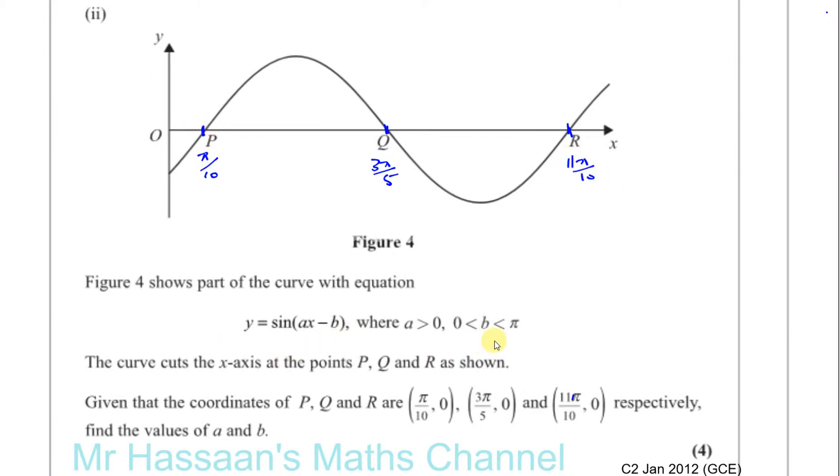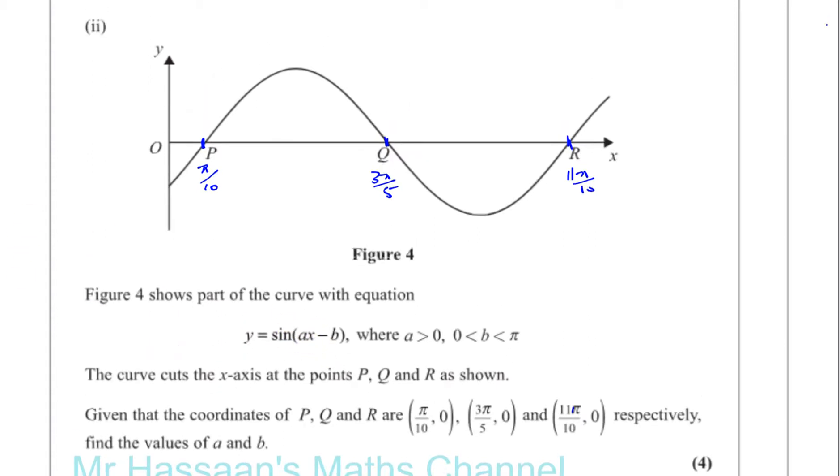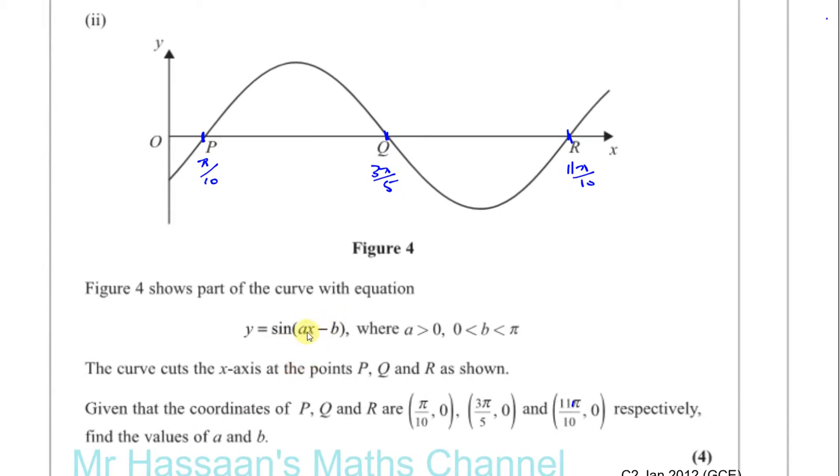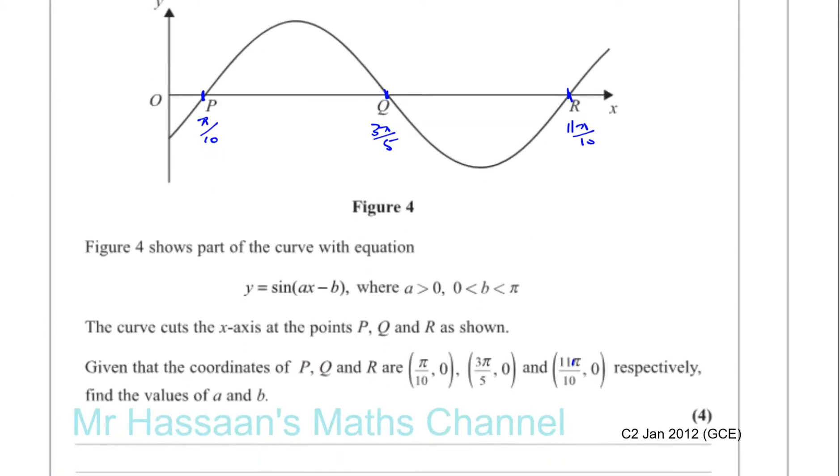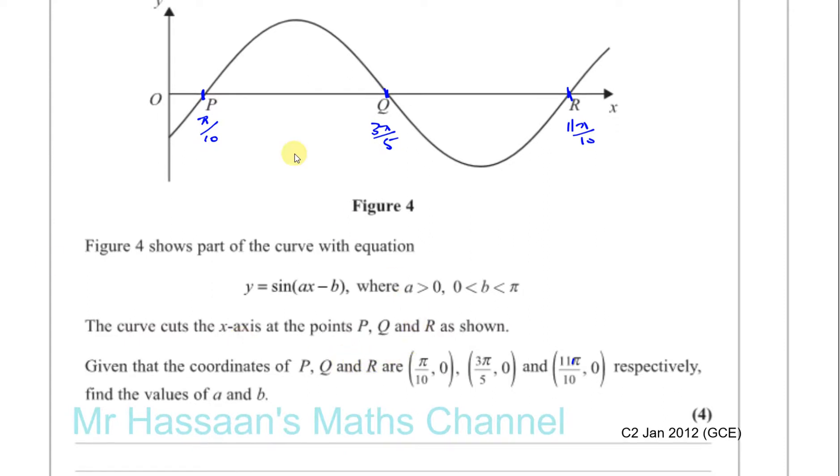So this B is something positive, so this has definitely been shifted to the right by a certain amount. There's also a horizontal stretch going on too. The knowledge we have in P1 and P2 or C1 and C2 doesn't deal with these multiple combined transformations, so I'm not going to go into the details about that. I'll just show you how to do this purely algebraically. So basically what's happened here is we know that sin(Ax - B), when x is equal to pi over 10, is going to give us 0. This is the x-value and this is the y-value.